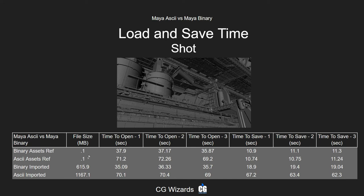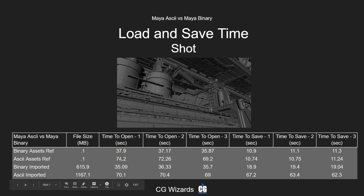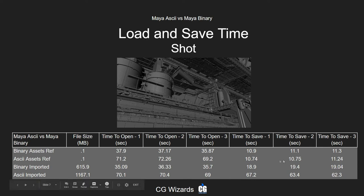Looking at the reference files, the shot file sizes themselves were pretty small because all the file size is with the assets being referenced in from different Maya scenes. The time to open the shot with ASCII assets was about 34 extra seconds compared to referencing all binary assets. The time to save was relatively the same because we're only saving the animation and any other changes done inside the shot — not the assets themselves.